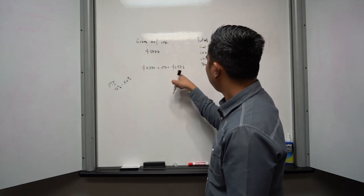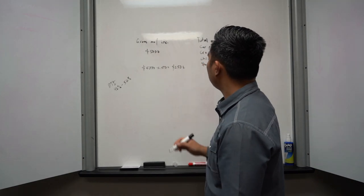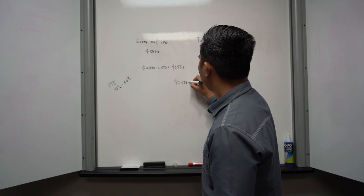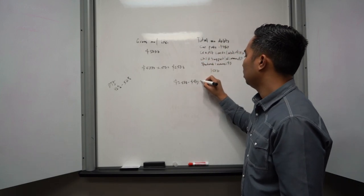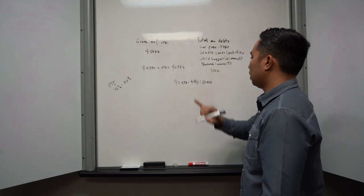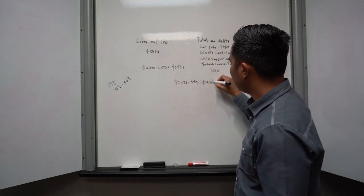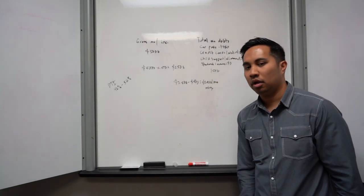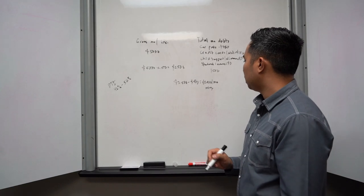So you'll take $2,500 and subtract your gross monthly income minus your total monthly debts. So $2,500 minus $500 is $2,000. What that'll tell us is how much you can afford monthly in a mortgage.